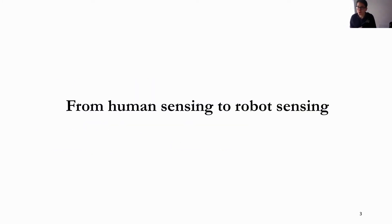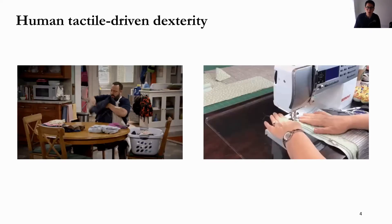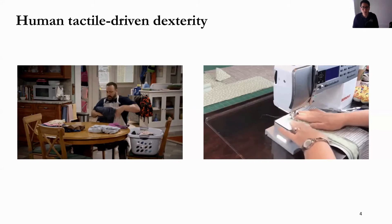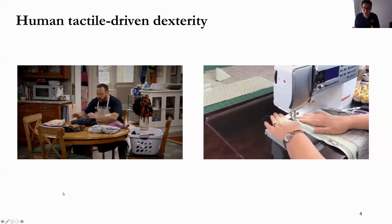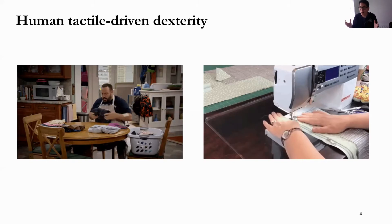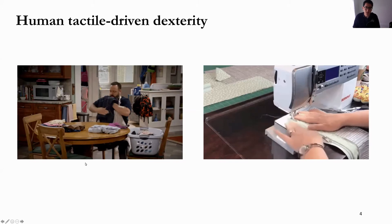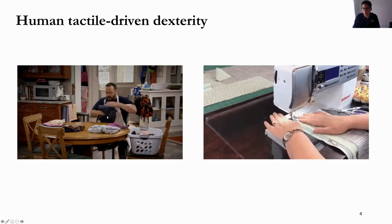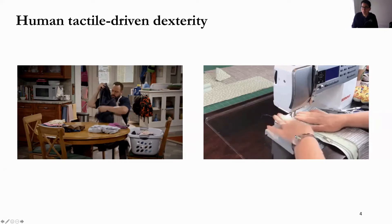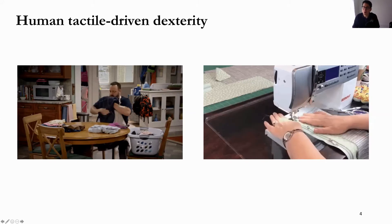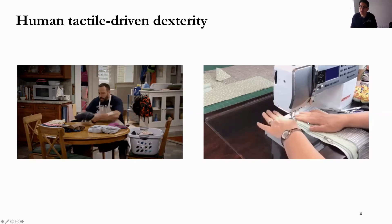Why shall we focus on tactile sensing? We get our inspiration from humans. In our daily life we make use of vision and touch for many tasks — for example, garment manipulation for folding and laundry tasks. We use our eyes and also the sensory touch on our hands to manipulate these garments. When we do sewing, it's a very delicate task and we also use our eyes and sensory touch to guide the motions of our hands.